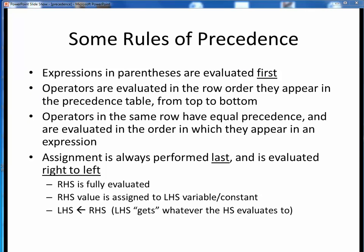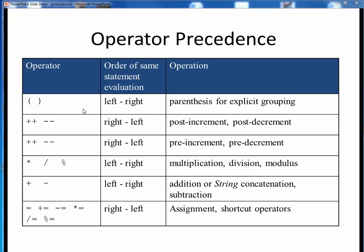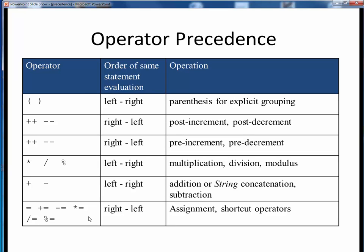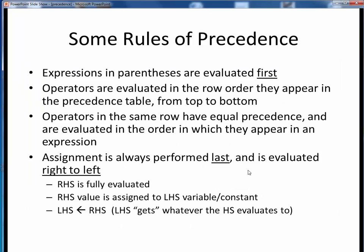After that, operators have top to bottom priority order, and if two operators in the same row appear in an expression, they are evaluated in the order in which they appear in any statement. So, operators are evaluated top to bottom and generally from left to right. Also note that any operation involving the assignment operator is always evaluated last, and in right to left order. This means that the right hand side of any assignment operation is always evaluated fully and then assigned to the left hand side value.